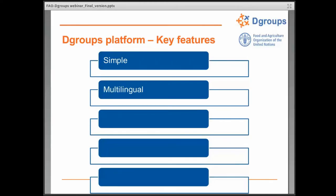We keep hearing back from user communities that it doesn't take any technical knowledge to engage in dialogue using dGroups. It's multilingual – the user interface is available in English, French, Spanish, Portuguese, Chinese, and Russian. And very importantly, you just use the tool in the language in which you are hosting the dialogue. It's also flexible and scalable: each dGroup workspace allows for customizable individual member profiles, and they can be grouped by country or given customizable email delivery preferences, from immediate delivery to daily or weekly summaries.